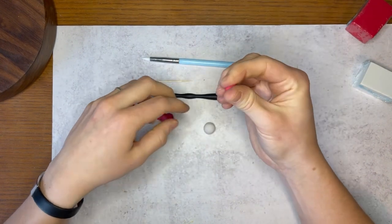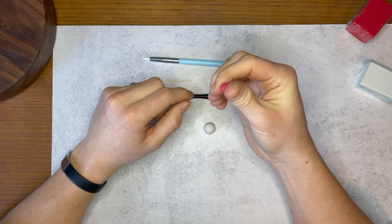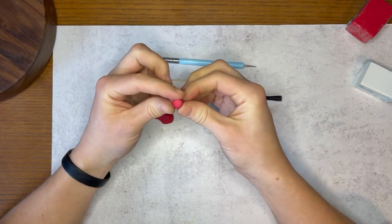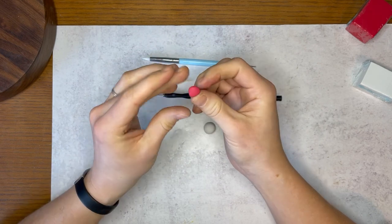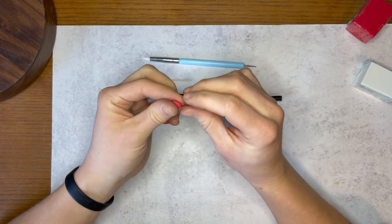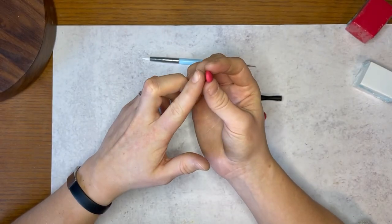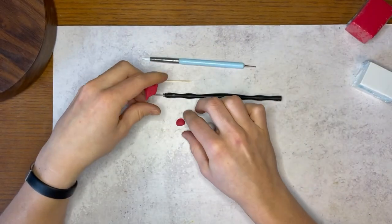For earrings or pins or the like, you will do the same process. Roll it into a ball but then flatten that ball slightly. Press it on your thumbs and tap around to make it into a gumdrop. Make sure it rests on your work surface like this because that will be against your ear or your clothes or whatever.